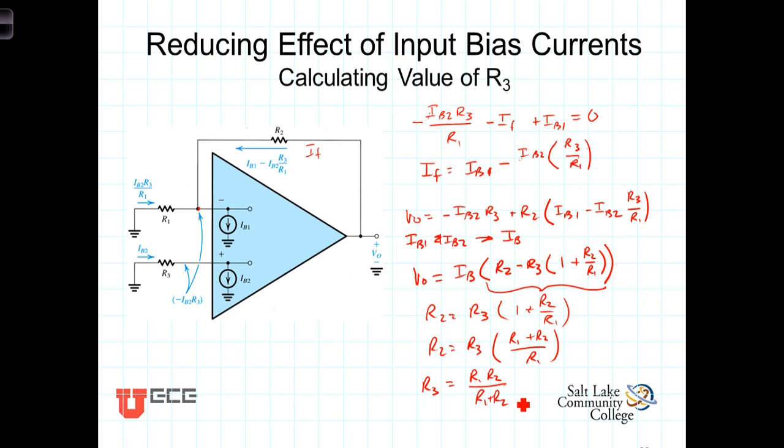And we recognize that the value of R3 should equal the parallel equivalent of R1 and R2. Now, that may seem a little bit surprising, but if you think of it in terms of what is the effective resistance that this current source sees as it looks back out from the inputs?